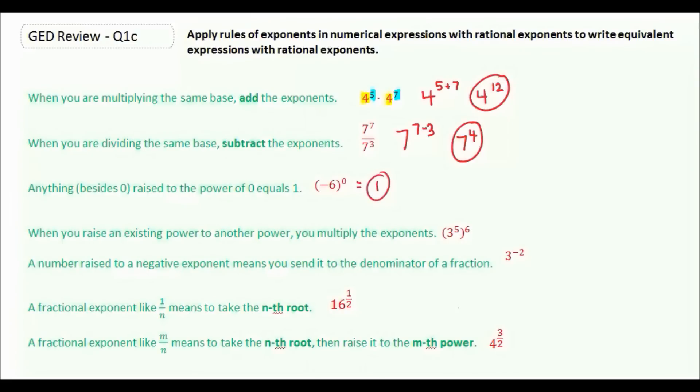When you raise an existing power to another power, you multiply the exponents together. So here we have 3 to the 5th, but then we're raising that to the 6th power. So we're going to say 3, and multiply our exponents together, which equals 3 to the 30th.